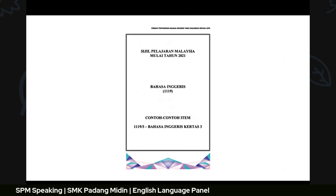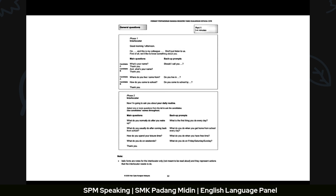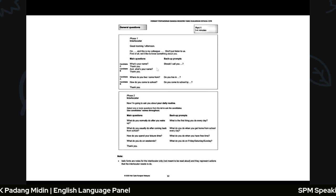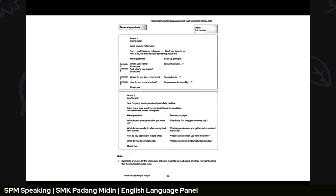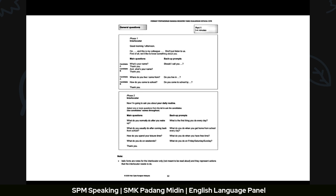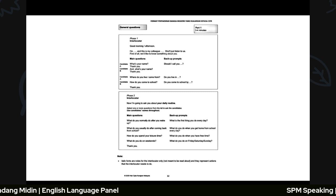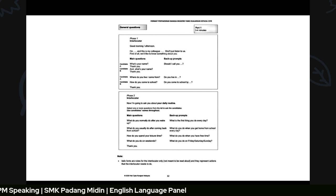The interlocutor reads from a script. For example: 'Good morning, I'm Sir Praffin and this is my colleague Sir Kairul. He will listen. I'd like to know something about you — what's your name?' You answer with your name and a preferred nickname. Then the interlocutor asks Candidate B a deeper question, such as what your hobby is or how you spend your leisure time on weekends.